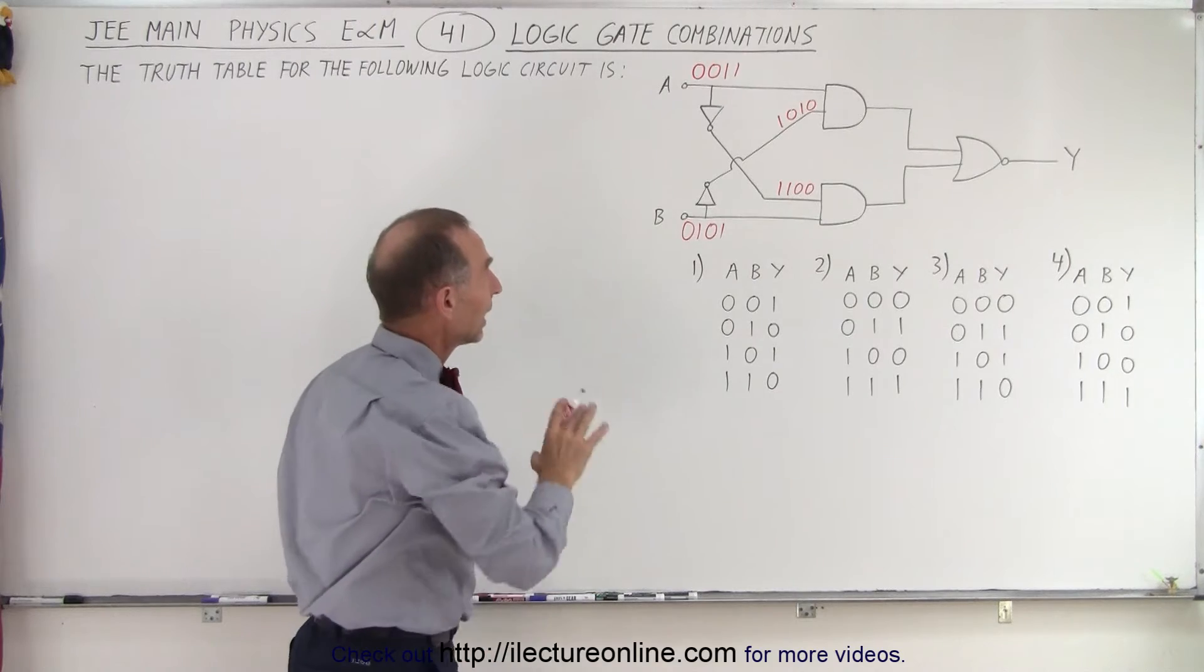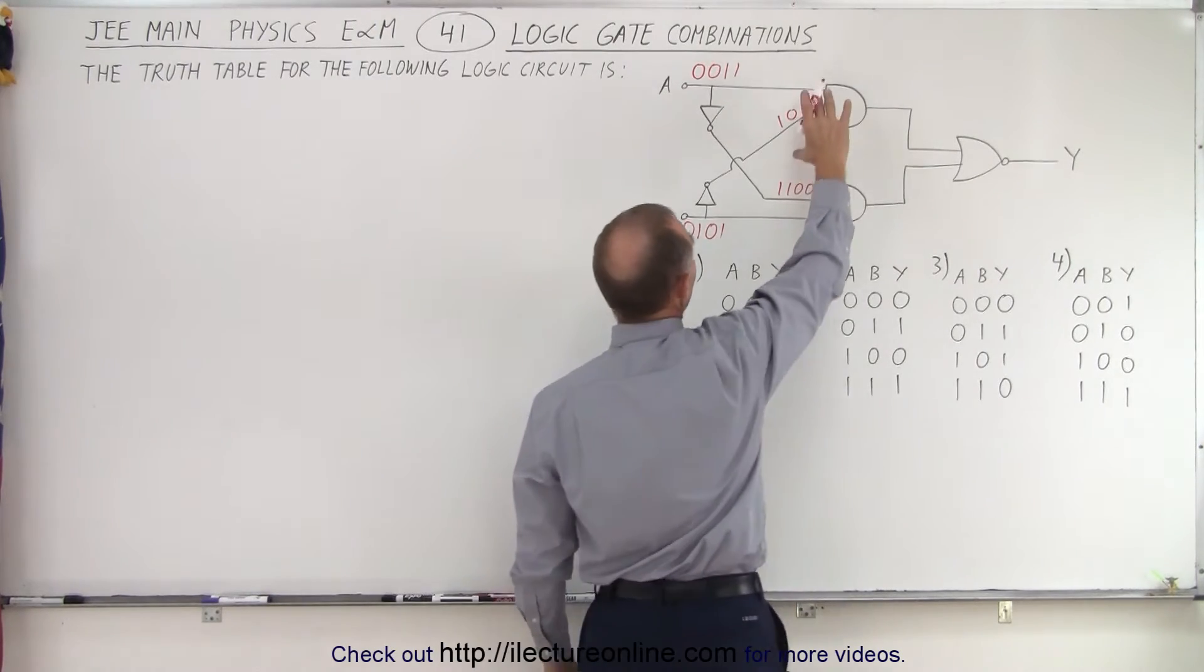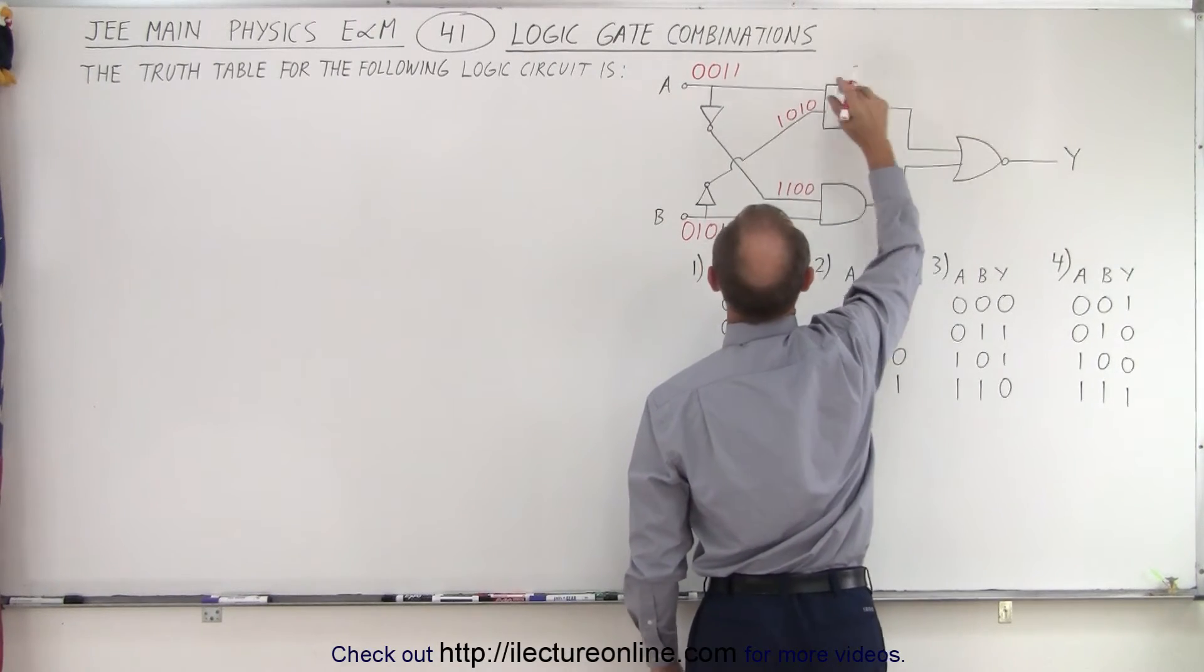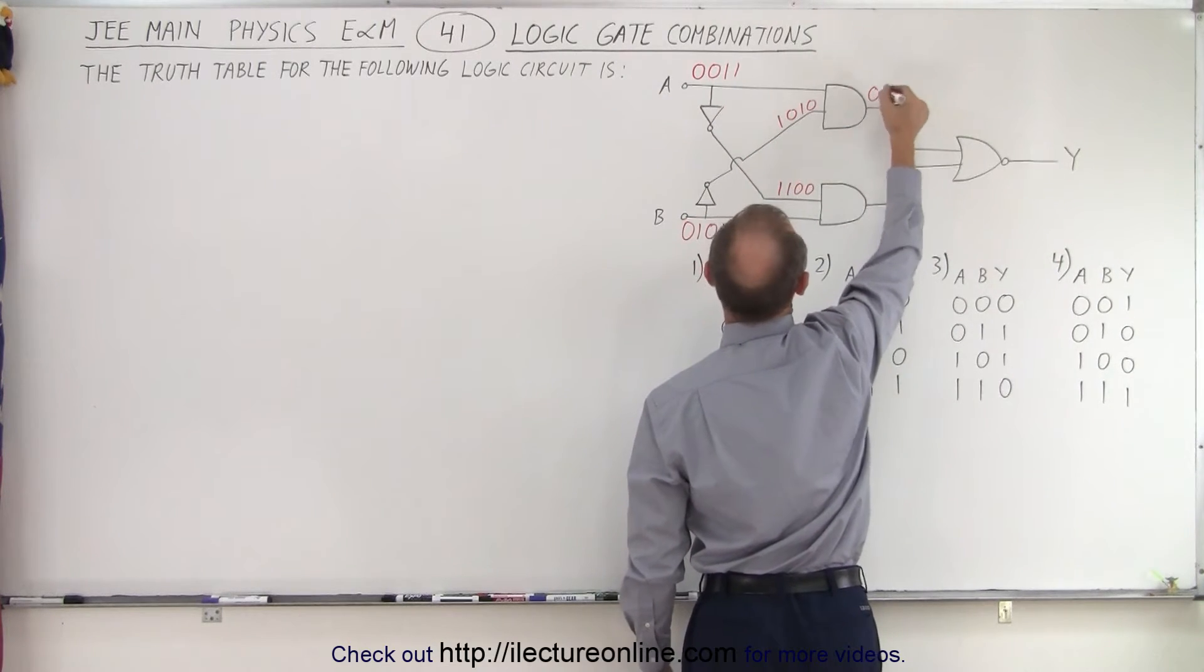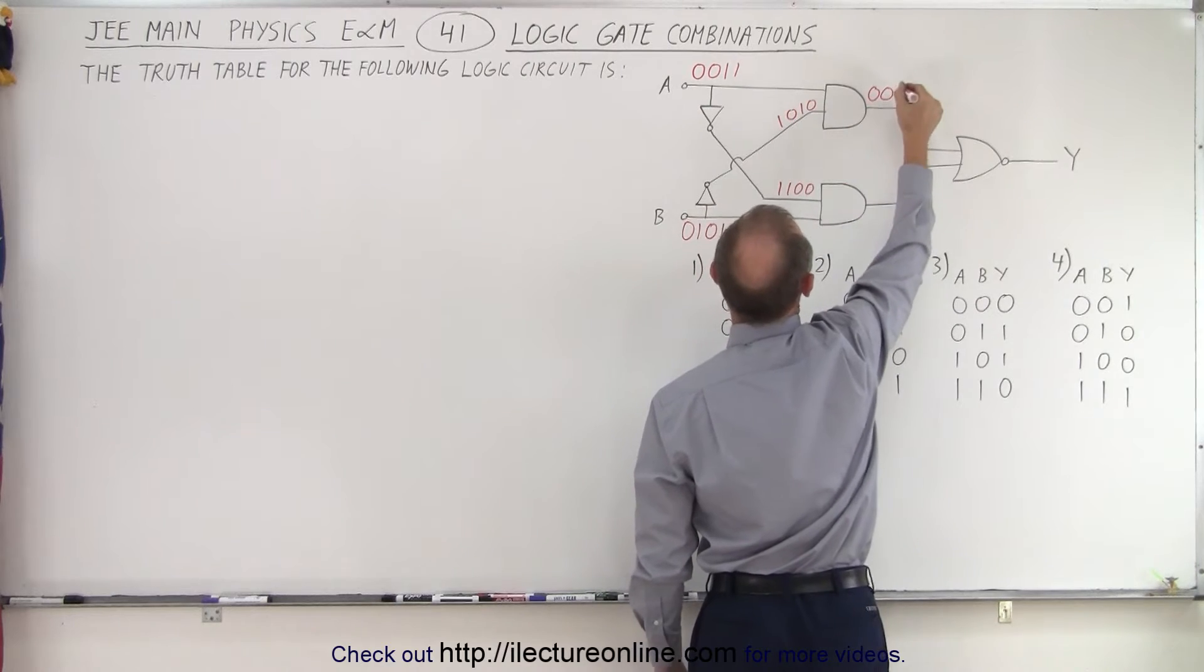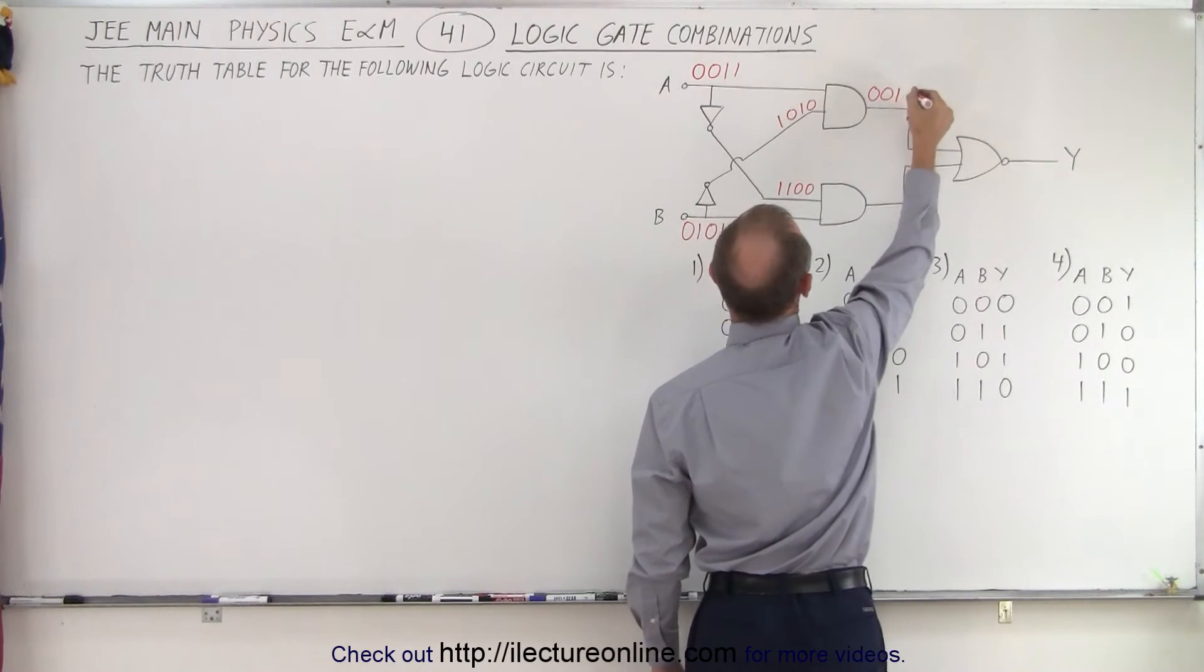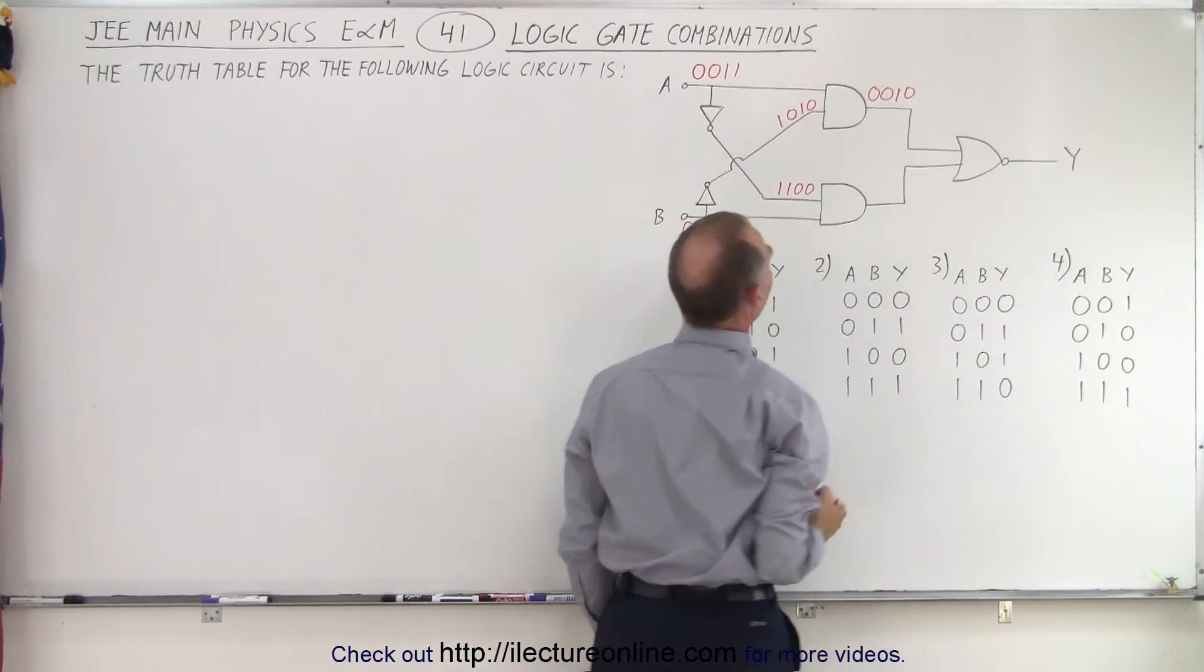Okay, so now that we have the inputs on the two leads on the AND gate, what comes out of the out? We have a 0 and a 1 that gives us a 0, a 0 and a 0 gives us a 0, a 1 and a 1 gives us a 1, and a 1 and a 0 gives us a 0. So that's the output of the top AND gate.